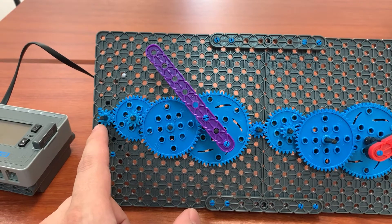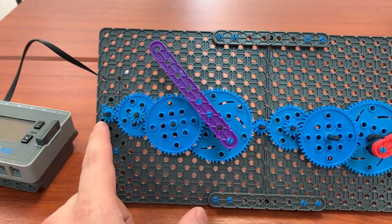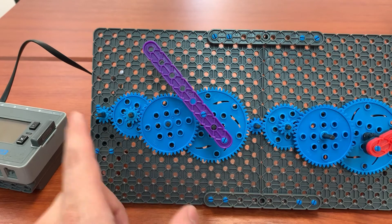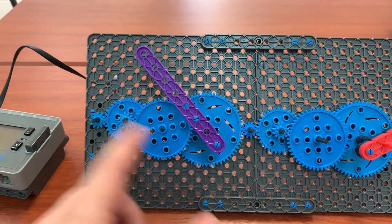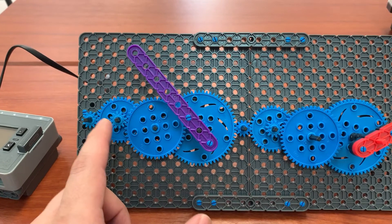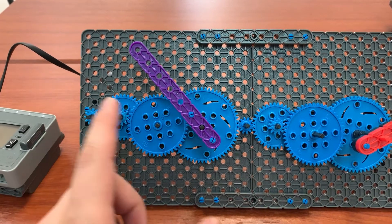So what we do to keep things simple for the kids is we just call them a 1-gear, a 2-gear which is the 24-tooth, a 3, a 4, and a 5. Those numbers are much easier to multiply and divide than 12, 24, 36, and so on.